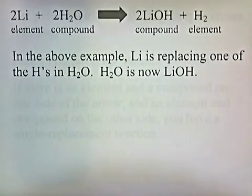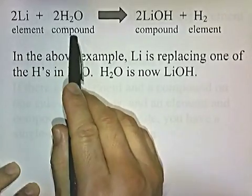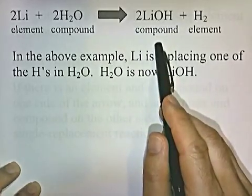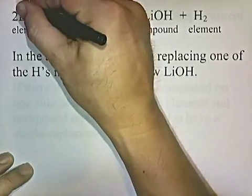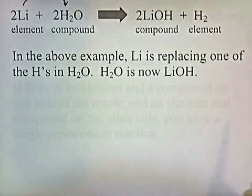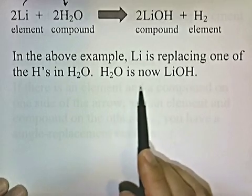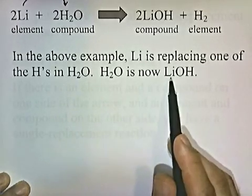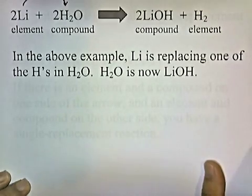Here's another example. Lithium, which is an element, reacts with H2O, which is a molecular compound, to produce lithium hydroxide, which is a compound, and an element. The lithium is displacing one of the hydrogens — lithium is replacing one of the hydrogens in H2O. So H2O has now been turned into LiOH, with one of the H's replaced by Li.